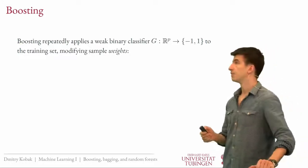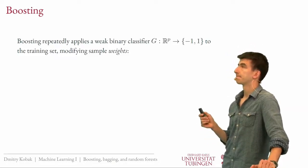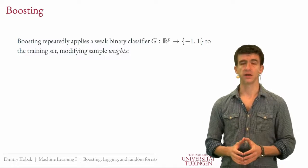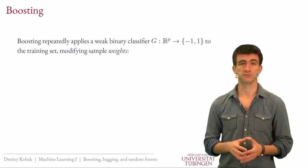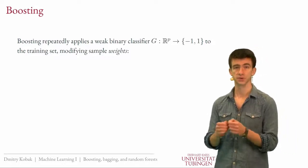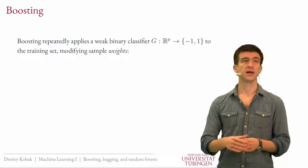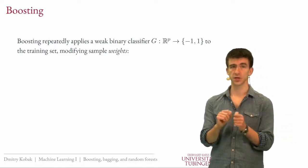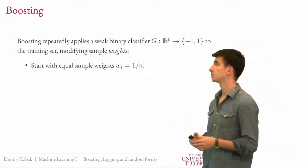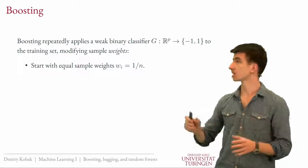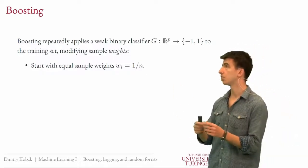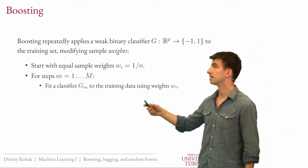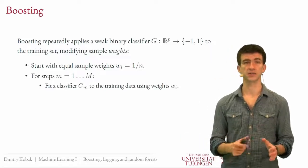Boosting is a method that repeatedly applies a classifier — usually a weak classifier. We will use tree stumps as an example: a very simple classifier with huge bias. You repeatedly apply this classifier to your training set, but every time you modify the training set slightly by changing the weights of specific samples. The generic outline: start with all samples having equal weight, then apply your classifier to this weighted training data.